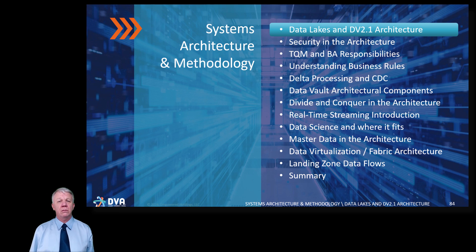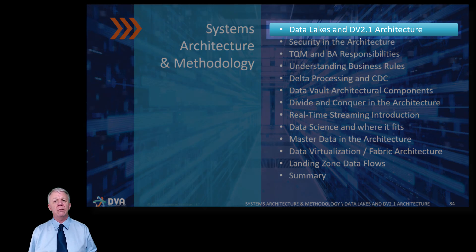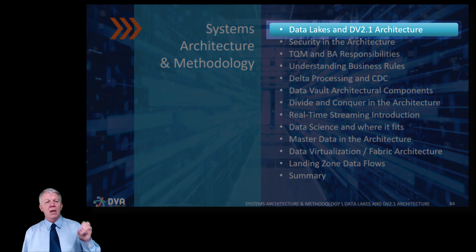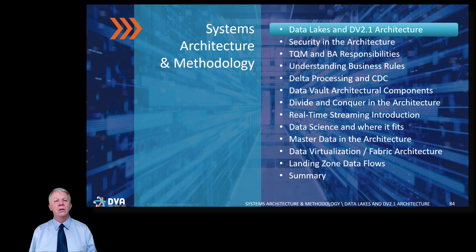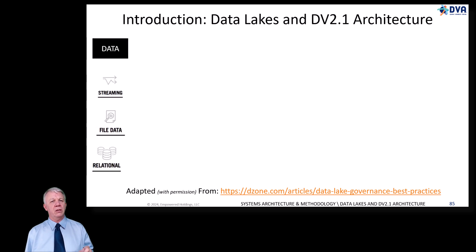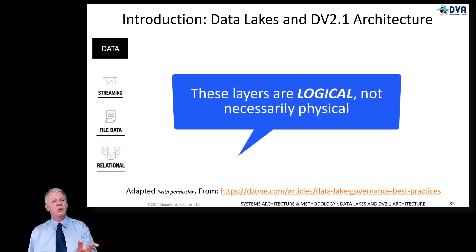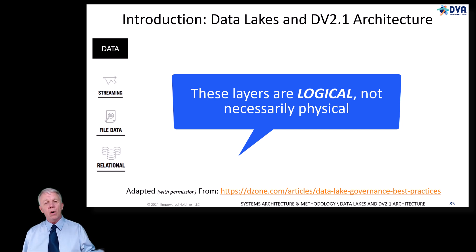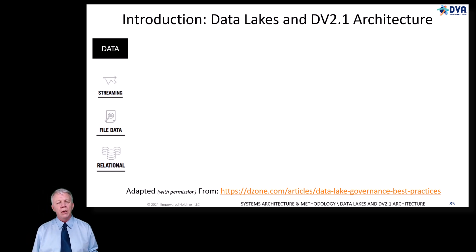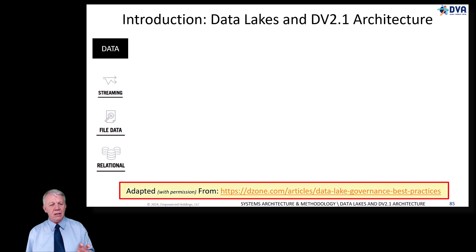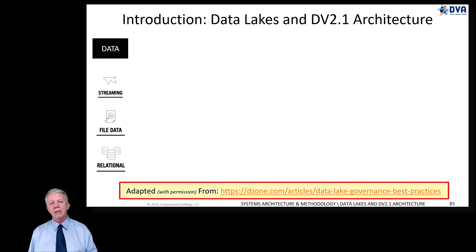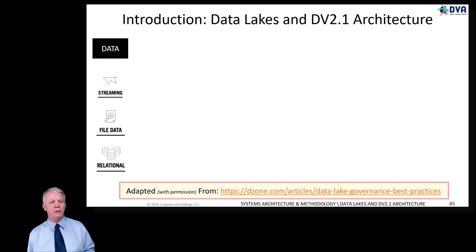This is one of my favorite topics. We're going to define data lakes and Data Vault 2.1 architecture. In this topic, we're going to dive into the different levels or layers. Don't think of these layers as physical — these are logical labels that apply to the different ways you categorize and organize all of your data sets. We did get permission to not only use this diagram in its entirety, but to modify it and use it for our own purposes within our training.